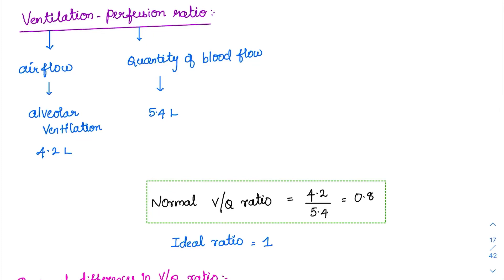Now coming to another important topic: the ventilation-perfusion ratio. Ventilation is nothing but airflow. Here we will be considering only the alveolar ventilation, because only alveolar ventilation is involved in gaseous exchange. The alveolar ventilation is normally around 4.2 litres.